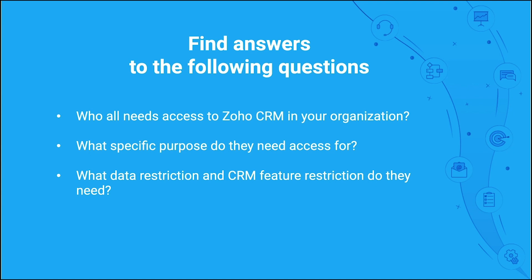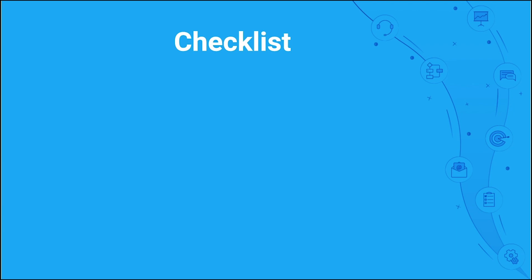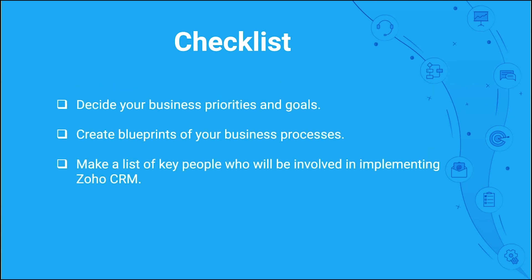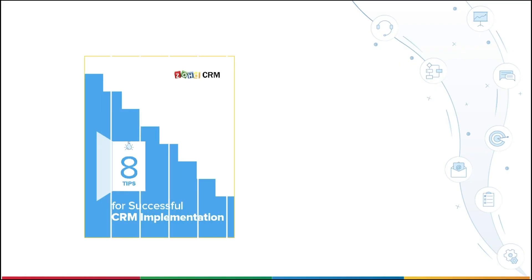Before you move on to the next phase of implementation, make sure you have a checklist of your business priorities and goals, blueprints of your business processes, and a list of key people who will be involved in implementing Zoho CRM. Additionally, download the ebook '8 Tips for Successful CRM Implementation' from our resources section for more tips.